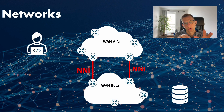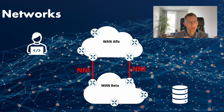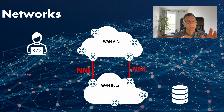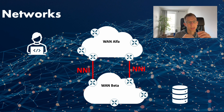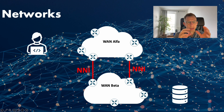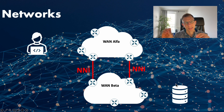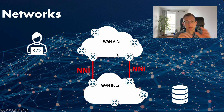Hey everyone, welcome back to our channel. Today we will be discussing two interesting routing techniques in networking: hot potato versus cold potato routing. Imagine we have two independent networks, WAN Alpha and WAN Beta, connected via two network interconnects or NNI — Network-to-Network Interconnects. Our goal is to route traffic from a user on WAN Alpha to a destination server in WAN Beta, and see what's the difference between hot and cold potato routing.